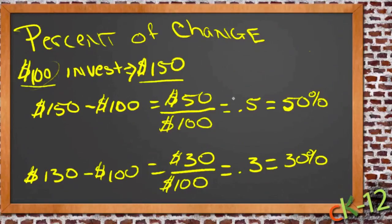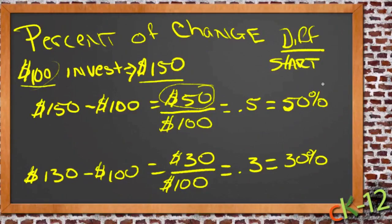So the percent of change is just what you put in, taken away from what you get out, so that you get the difference between the two, divided by what you put in. So the difference divided by the starting value. And that's it.